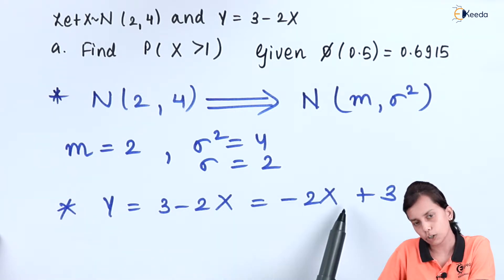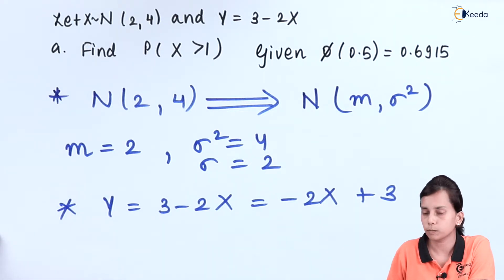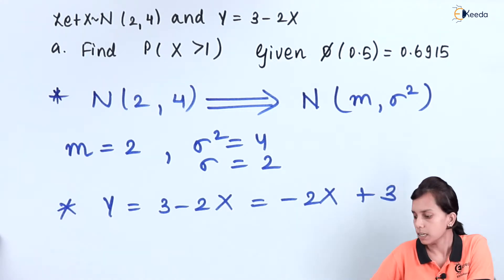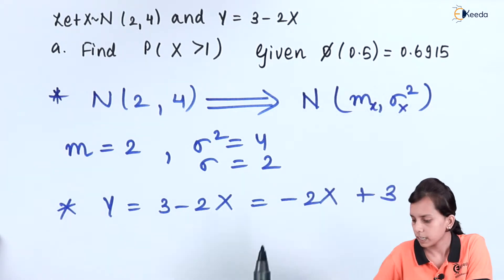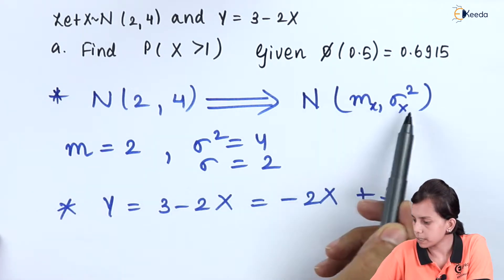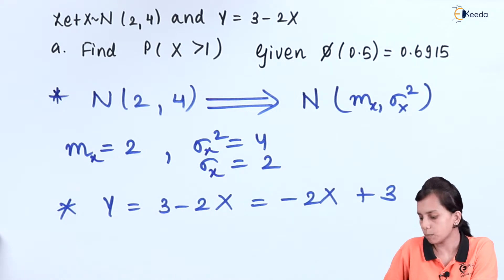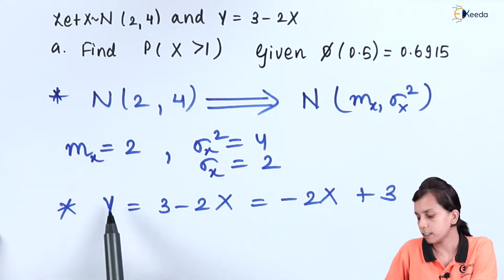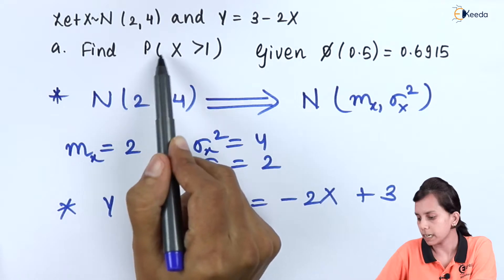If capital X is Gaussian, then Y will also be Gaussian but with a different mean and different variance. Let us represent the parameters as m_X and σ²_X so it is easy to differentiate between X and Y. If we are interested in the Gaussian distribution for capital Y, we need to calculate the mean and variance for capital Y in order to calculate the probability that X is greater than 1.